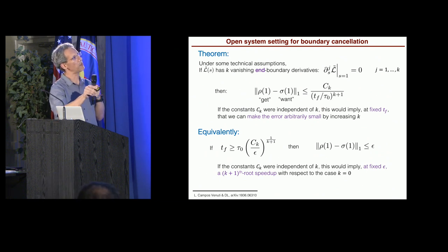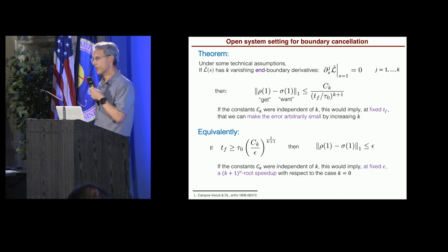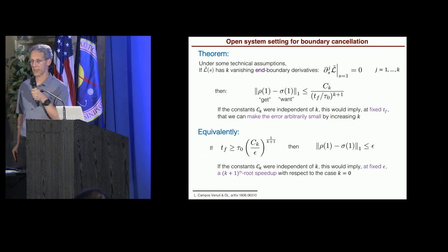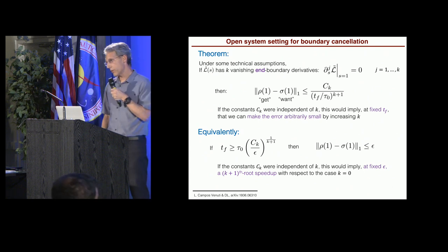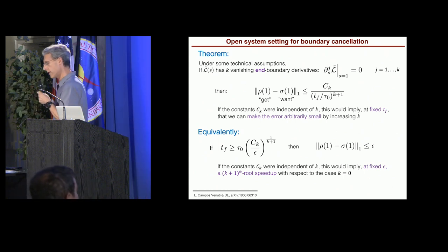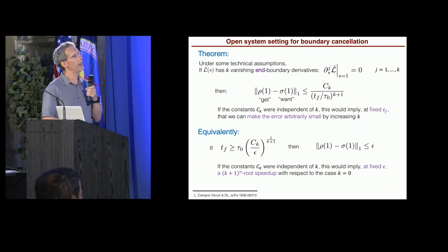All right? So if you plug in K equals 0 here, this power is 1. That's why I'm calling it a K plus 1th root speedup relative to not doing boundary cancellation. Okay. So this is the adiabatic open system version of the boundary cancellation result.